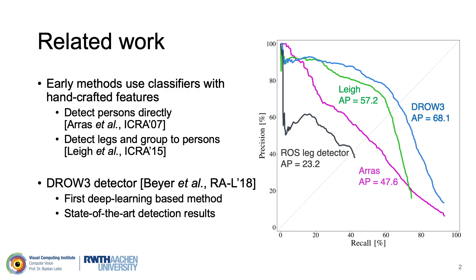The current state-of-the-art approach is the DROV3 detector proposed by Bayer et al. in 2018. Rather than using handcrafted features, it uses deep learning to detect persons in 2D range data. Our work, DRSPAN, is based upon DROV3 and achieves a new state-of-the-art while having more than twice the inference speed.